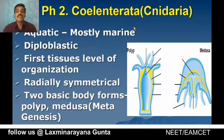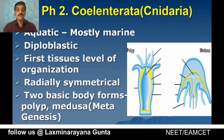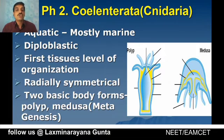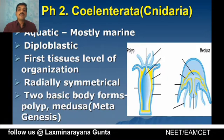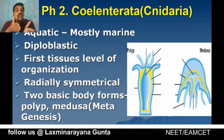The next phylum is Coelenterata, also called Cnidaria, because of the presence of specialized cells called cnidoblasts. They are aquatic and mostly marine. They are diploblastic organisms — cells are arranged in ectoderm and endoderm, with mesoderm absent. The first tissue level of organization is observed in coelenterates. They are radially symmetrical and two basic body forms are observed: the polyp and the medusa.